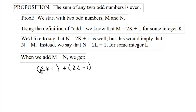And if we combine these, what do we do? We get 2k, we get 2l, and then the 1 plus 1 is 2. So we get 2k plus 2l plus 2.